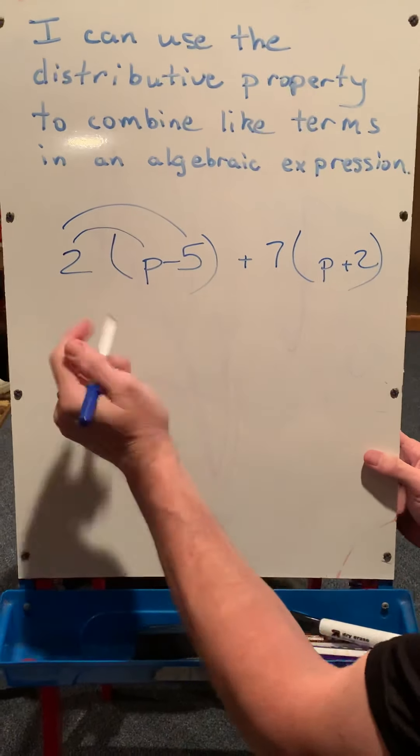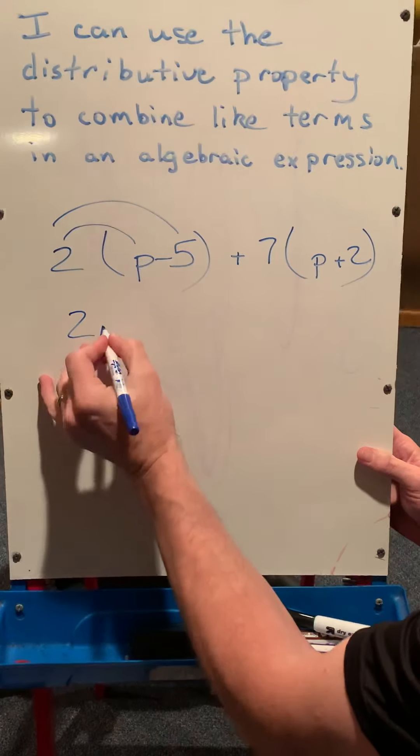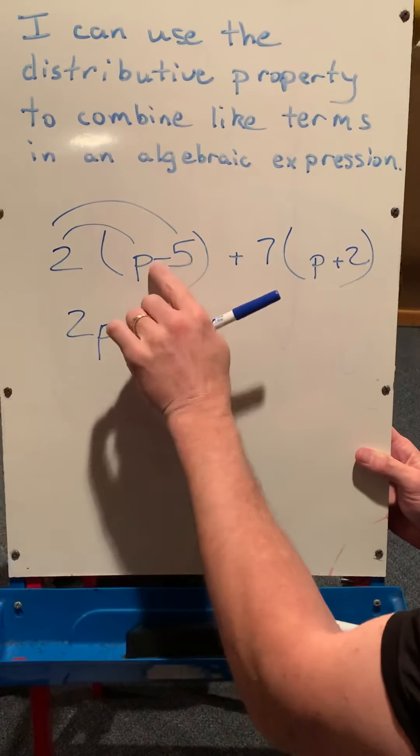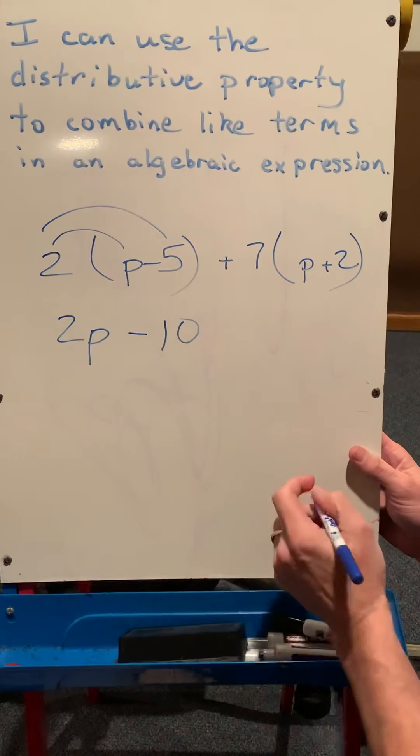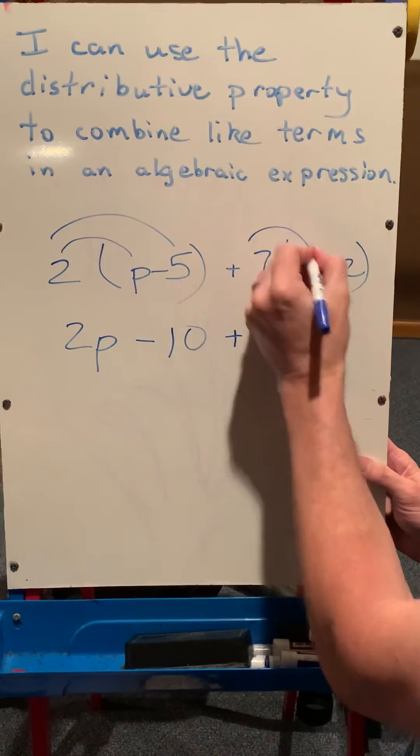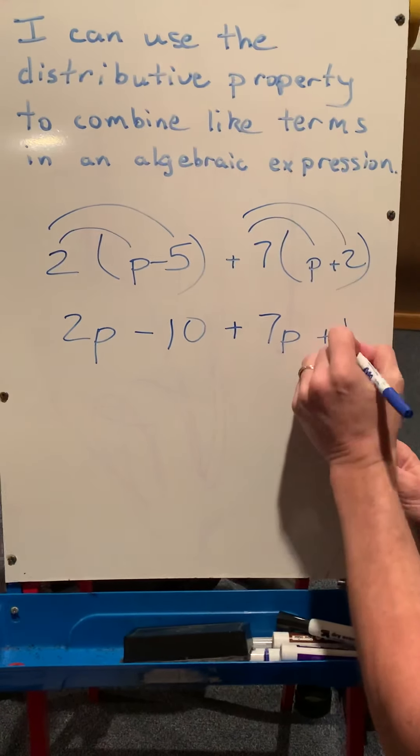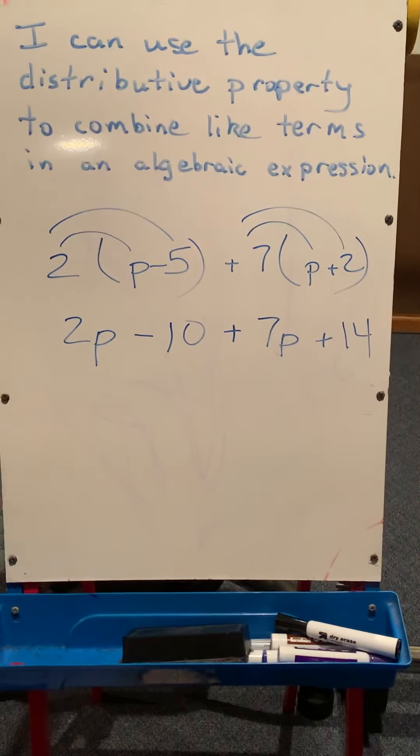So let's distribute the 2 through the parentheses. So this would become 2p, or 2 times p, minus 10. 2 times 5 is 10, it's minus here, so subtract 10 plus 7 times p is 7p, plus 7 times 2 is 14.